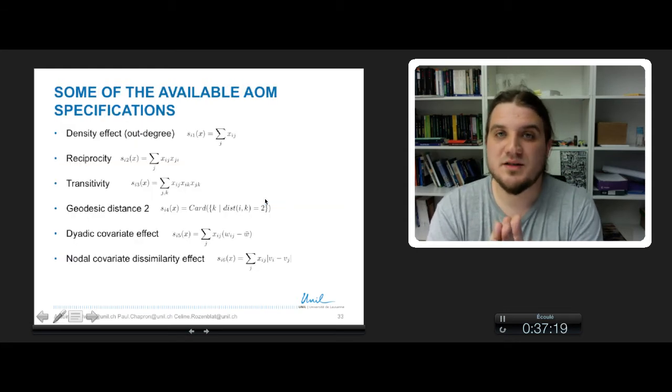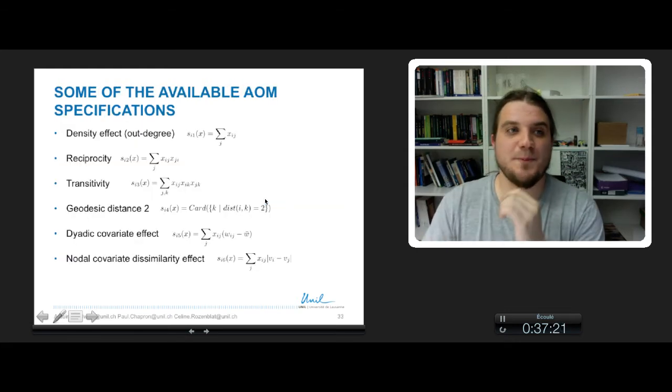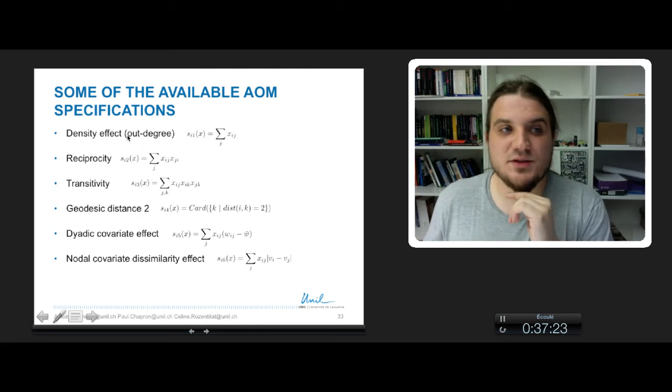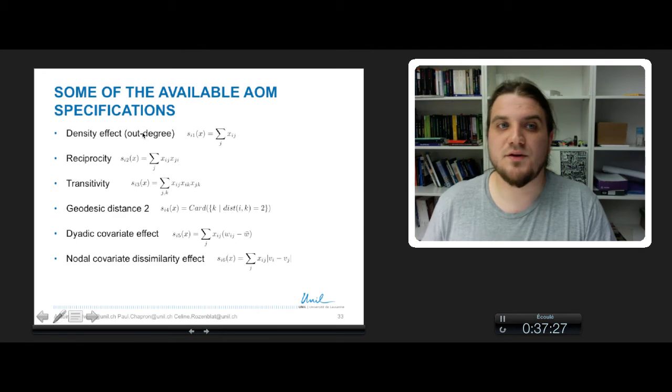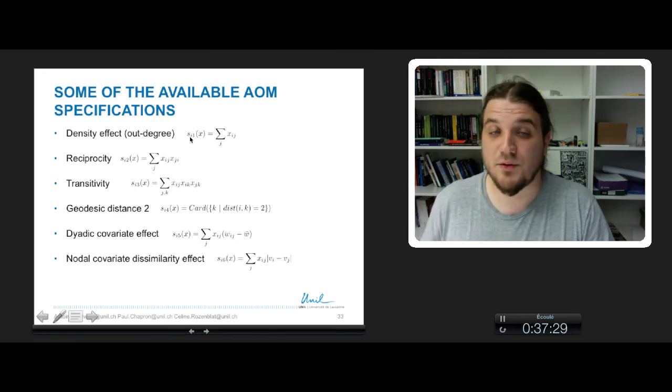So, specification for objective function. You can consider a density effect, an out-degree effect for a node i. So this first effect, Si1, is the sum for every neighbor j of i of the links ij.